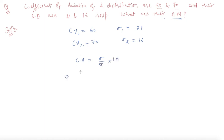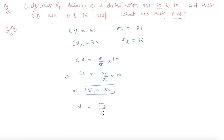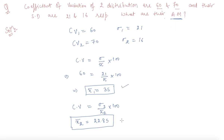For the first observation, Cv1 = 63 and σ1 = 21, so: 63 = (21 / x̄1) × 100, which gives x̄1 = 35. For the second distribution, similarly using Cv2 = (σ2 / x̄2) × 100, we get x̄2 = 22.85 after substituting all values. So the two arithmetic means are 35 and 22.85. This is the simpler method to find the arithmetic mean when the standard deviation and coefficient of variation are given.